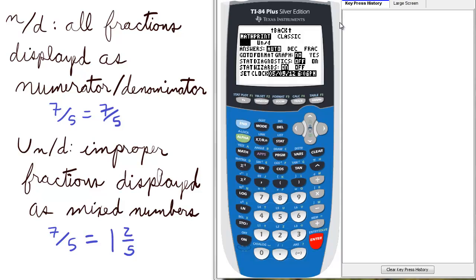On the second page, second line of mode, we get to choose between n over d or u n over d.